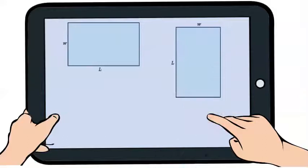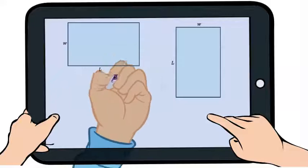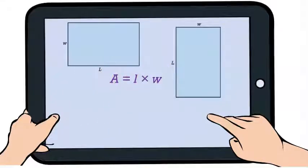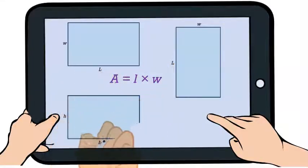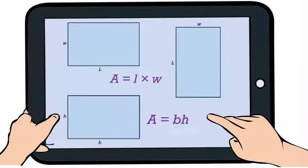To find the area of a rectangle, we multiply its length times its width, so the formula is A = L × W. Sometimes the length and width are referred to as the base and height, and you'll see the formula written as A = BH.